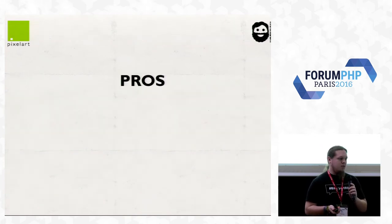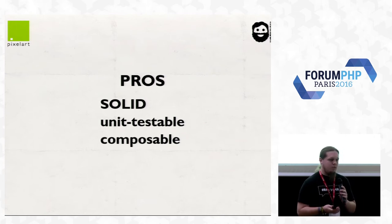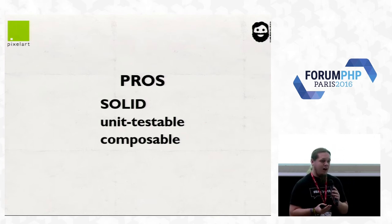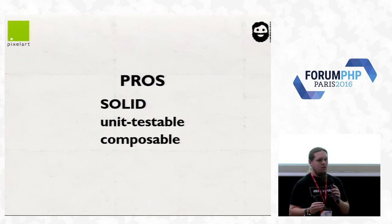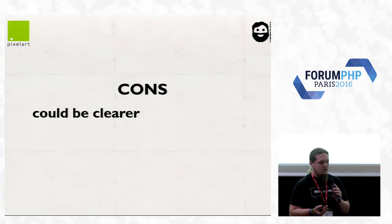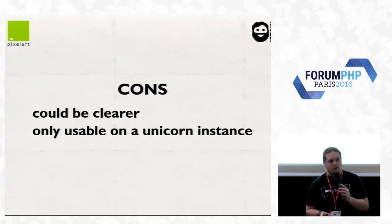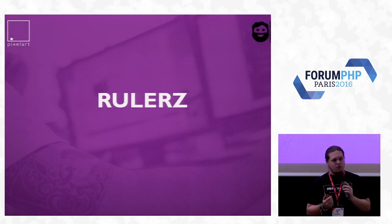The pros of this specification: they are solid, separated, unit-testable, and composable. If it's one small class, you have multiple small classes. There are some cons — it could be clearer, since you have a big if for unicorn can fly and unicorn color is white. And it's only usable on a unicorn instance — you cannot reuse it on a turtle. For that, you can use Rulers.